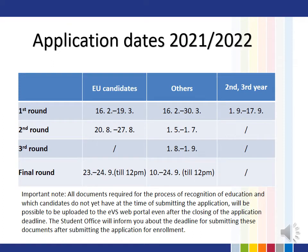Application dates 2021-2022: Application deadlines for all undergraduate study programs will open on February 16th, 2021. The first application deadline for European Union candidates ends on March 19th, and for other candidates on March 30th. It is no longer possible to change the study program after the closing of the application deadline. IMPORTANT NOTE: All documents required for the process of recognition of education which candidates do not yet have at the time of submitting the application will be possible to upload on the Evše web portal even after the closing of the application deadline. The Student Office will inform you about the deadline for submitting these documents after submitting the application for enrollment.